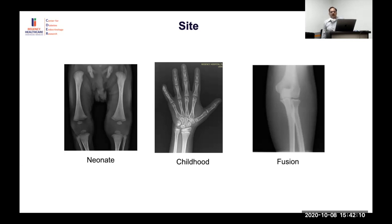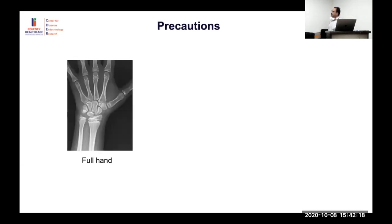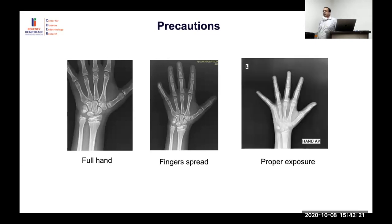For most other ages, the non-dominant hand and wrist is used. Shoulder X-rays are done by some practitioners but mainly for medico-legal purposes with limited clinical benefit. Precautions: the complete hand must be visible with fingers spread out, and exposure must be appropriate — an overexposed or underexposed film is not reliable.